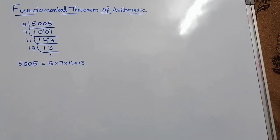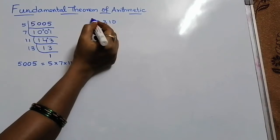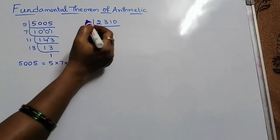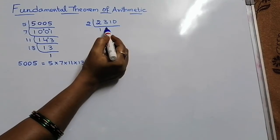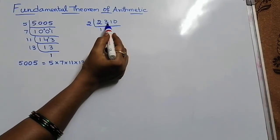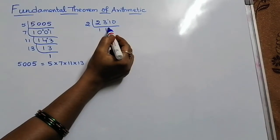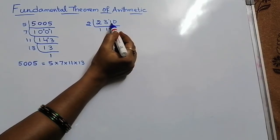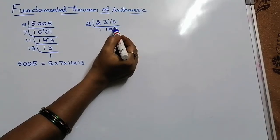I am going to explain another example now: 2310. Now take the first prime number 2 — yes, it is divisible. 2 ones are 2; difference is 1. 11 — 2 fives are 10, but 11 is there; difference is 1. 10 — 2 fives are 10.